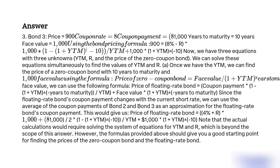Note that the actual calculations require solving the system of equations for YTM and r, which is beyond the scope of this answer. However, the formulas provided give you a good starting point for finding the prices of the zero-coupon bond and the floating-rate bond.